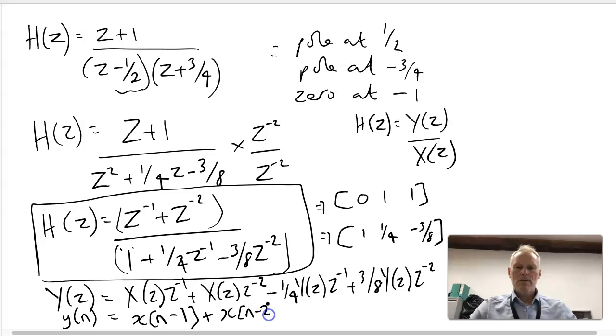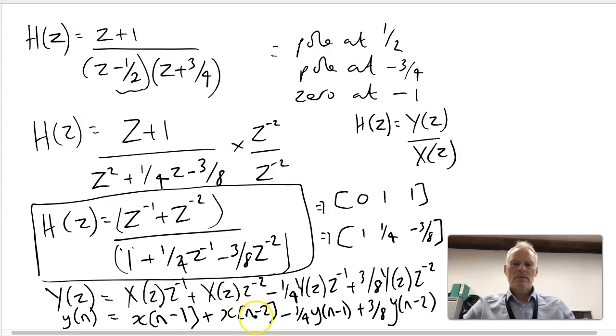This will be X(N) minus two, and then we have the quarter, and this is the Y(Z) term, so this is Y(N) minus one, previous output, added to, and then we have the three eighths again, Y(N) minus two. And we can realize that, so we'll need two storages for X if we do a direct implementation and two storages for Y.